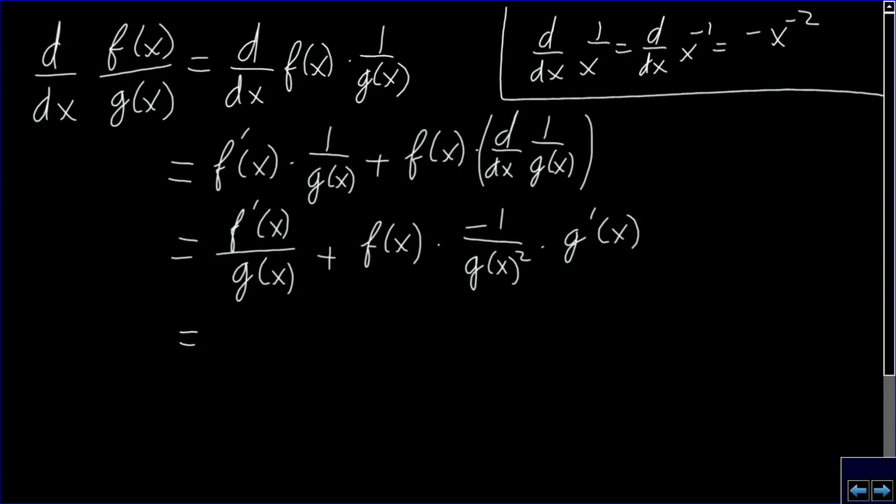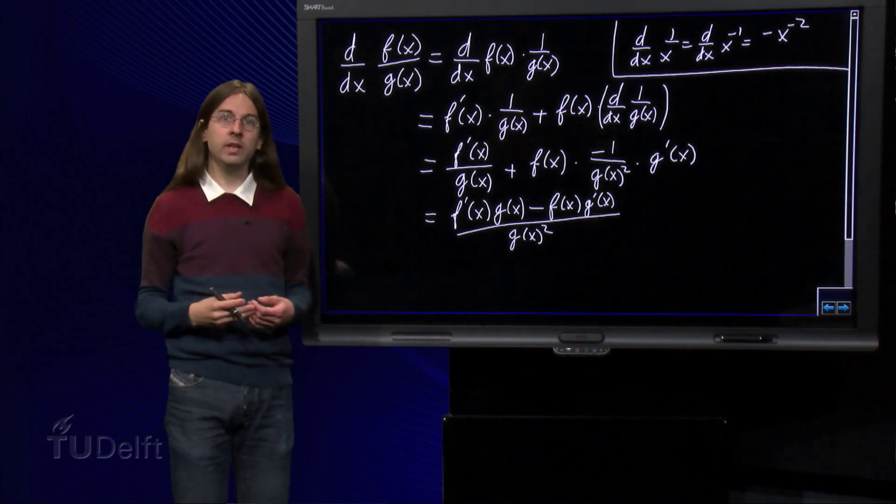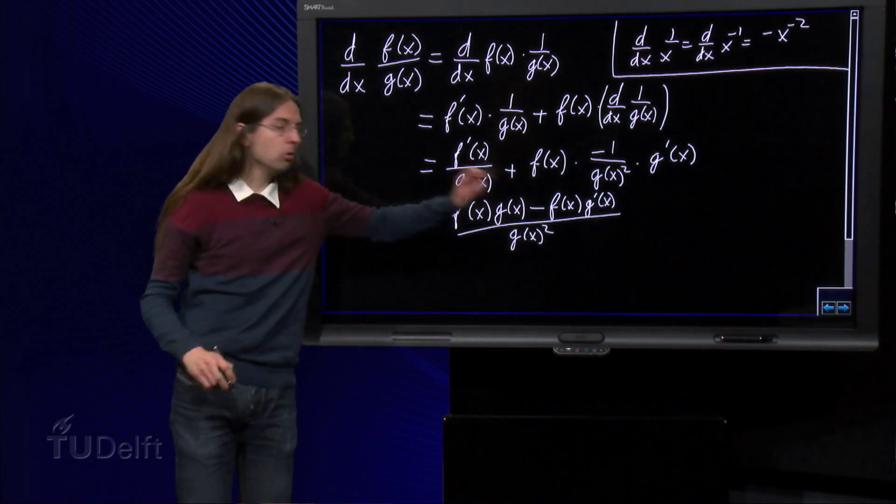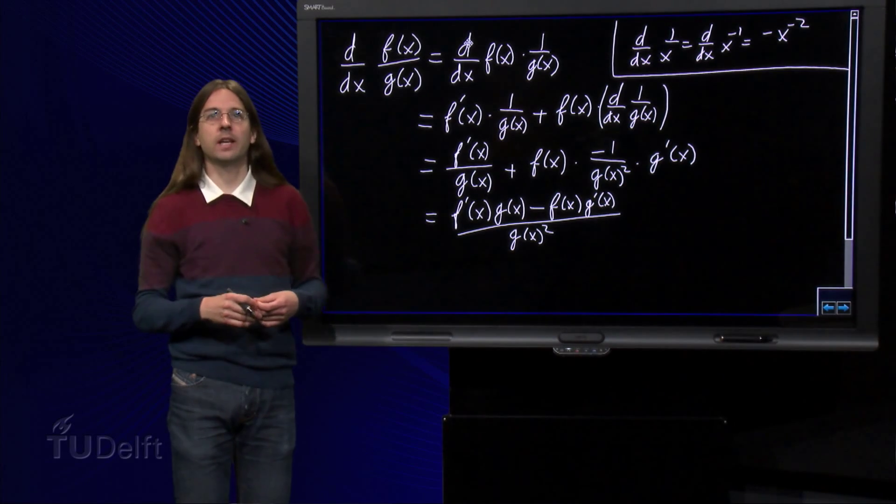Putting everything under the denominator, we obtain f prime times g of x minus f of x times g prime of x divided by g of x squared. Remembering the quotient rule this way, make sure you never get the wrong sign in this rule again.